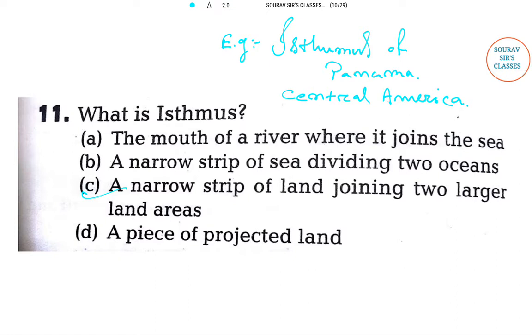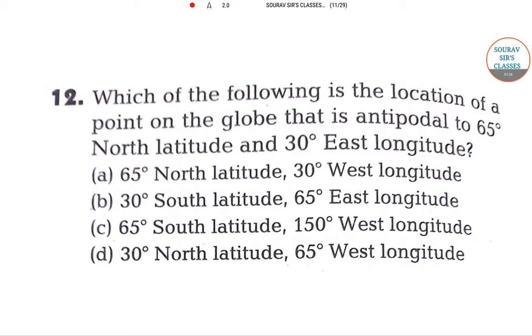Now let's go for the next question. Which of the following is the location of a point on the globe that is antipodal to 65 degree north latitude and 30 degree east longitude? Option A: 65 degree north latitude and 30 degree west longitude. Option B: 30 degree south latitude and 65 degree east longitude. Option C: 65 degree south latitude and 150 degree west longitude. Option D: 30 north latitude and 65 degree west longitude.